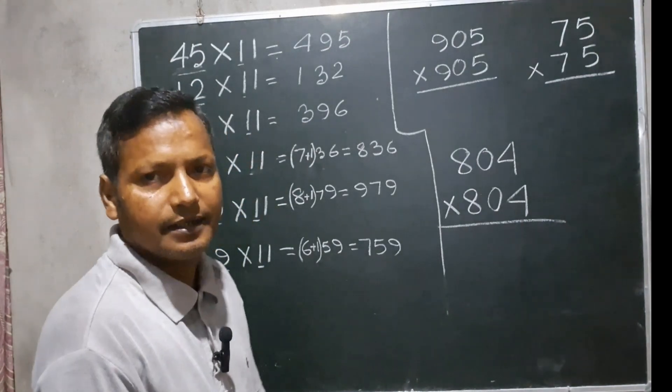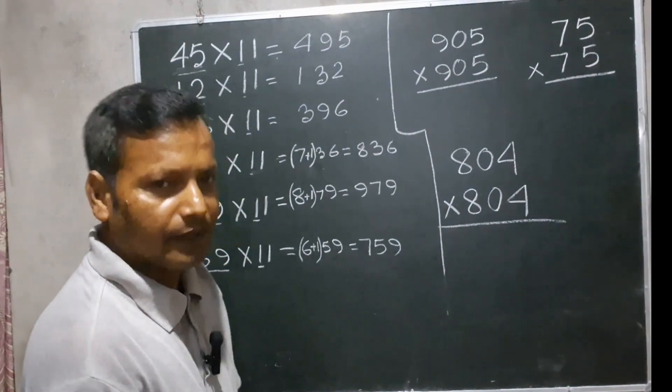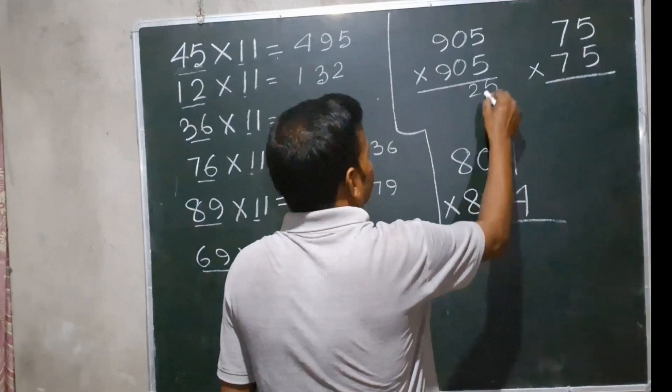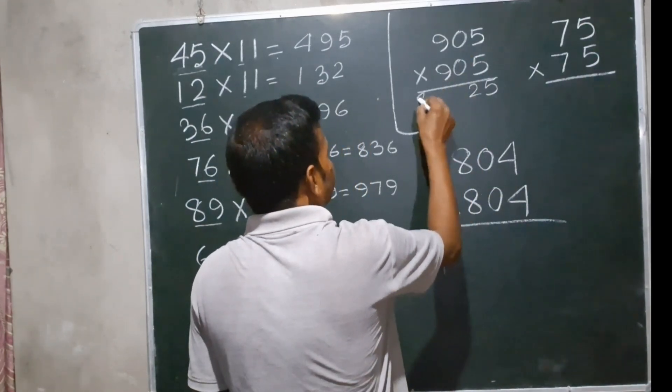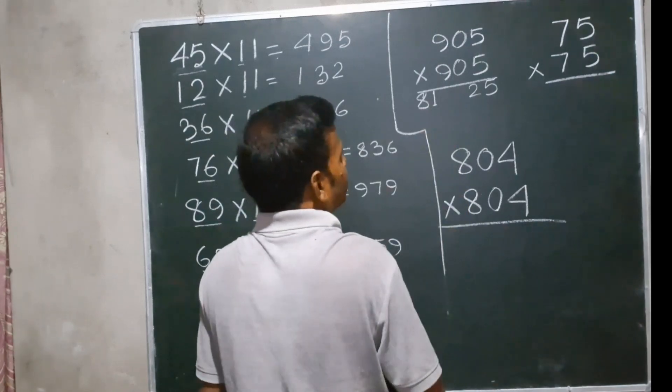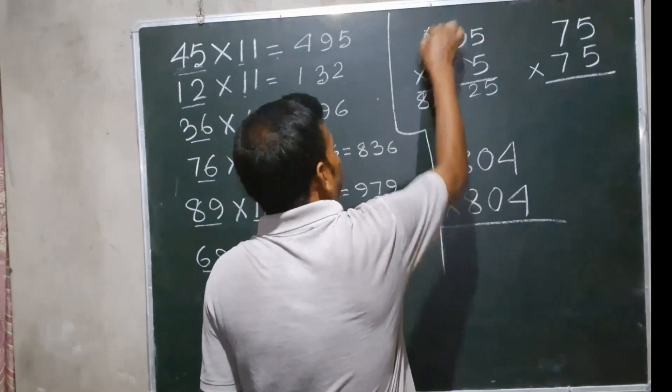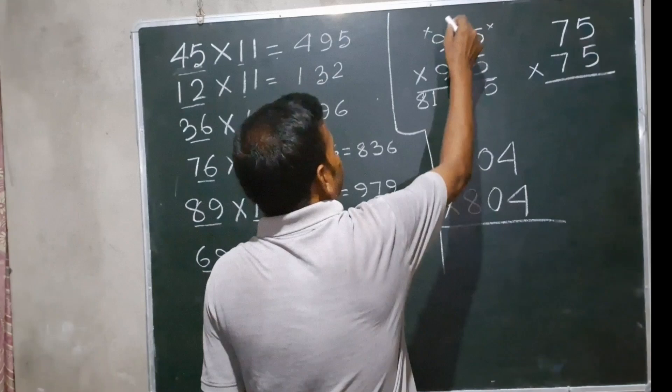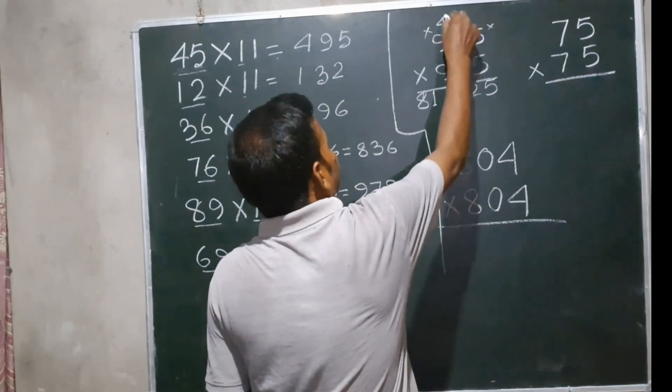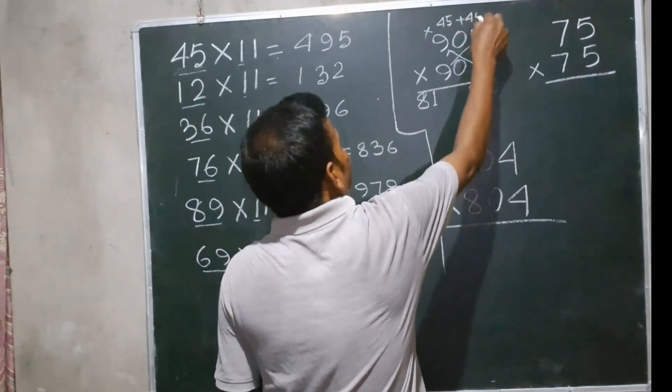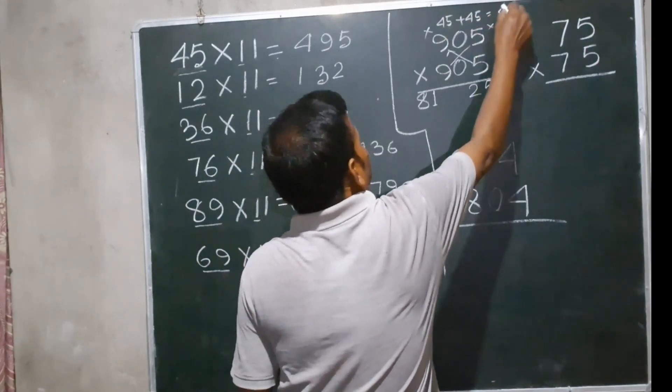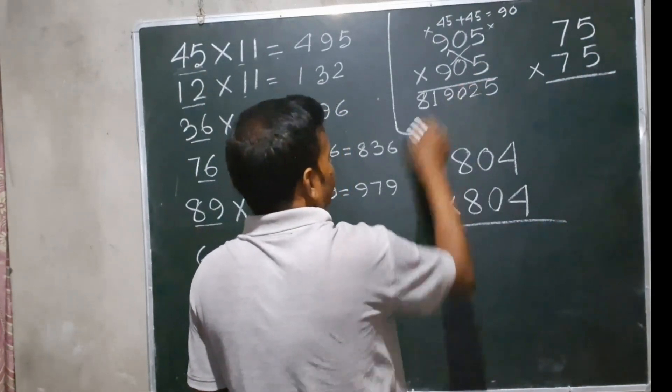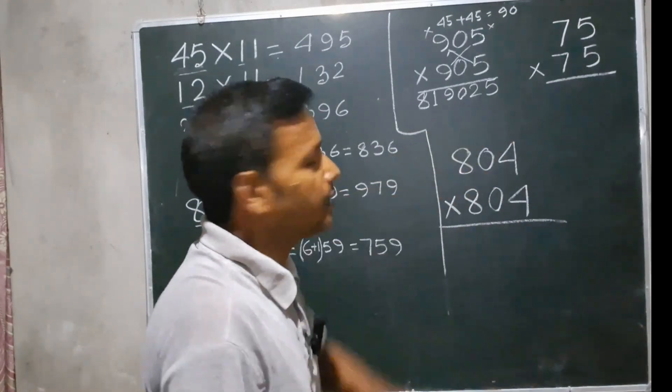Now this is another problem: 905 multiplied by 905, multiplied by itself. We multiply 5 times 5 equals 25. We write 90 in the middle, giving us 819,025.